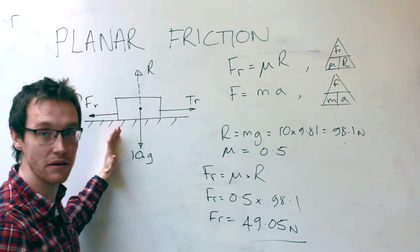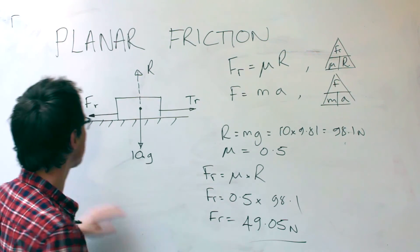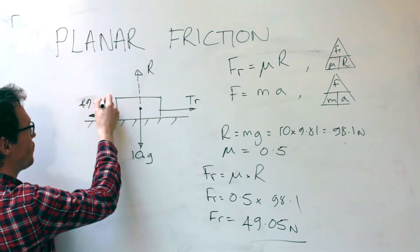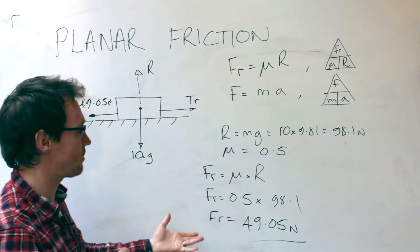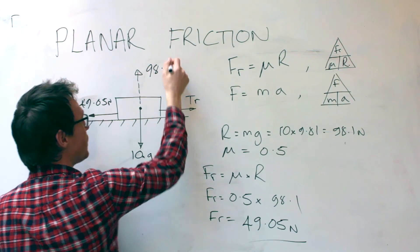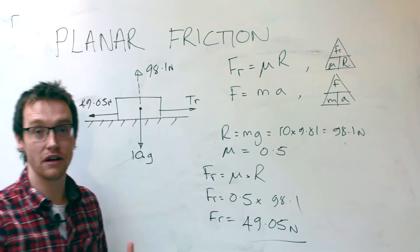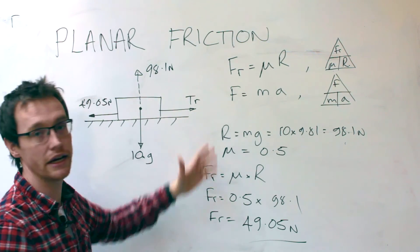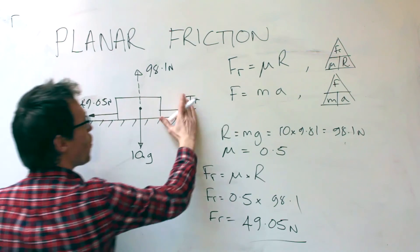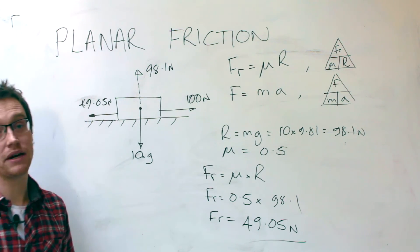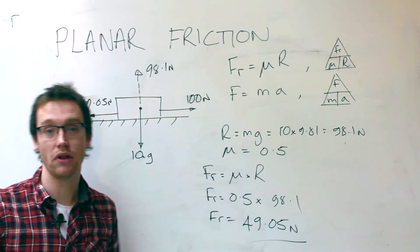Let's update our free body diagram. The frictional force in this case is 49.05 newtons. We've worked out the reaction force is 98.1 newtons. I'm going to introduce an extra part of this question. Let's say that there's a tractive force here of 100 newtons. The question then might say, how fast does this block accelerate?